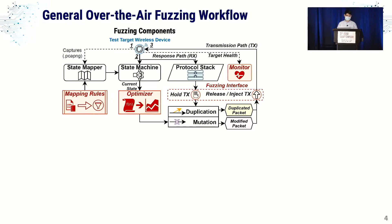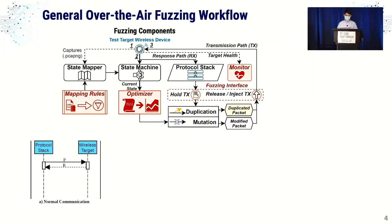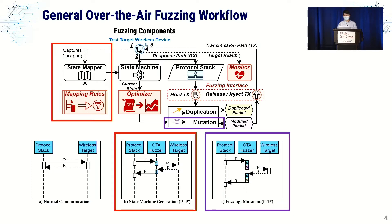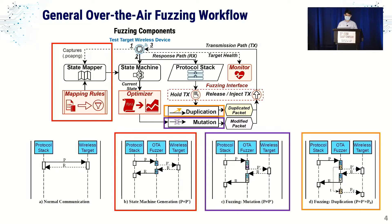Looking at the overall architecture of the framework, we introduce three steps to fuzz a Bluetooth Classic device. First, we have normal communication between the protocol stack and the target device. The first stage initiates the state mapper, where we introduce the framework between the protocol stack and the target device to reconstruct the state machine. This feeds the mutation block, which directs the device toward situations that can cause crashes by mutating valid packets. The last component is the duplication component, which sends packets out of order to cause different device behavior. The monitor component gets feedback by hooking connections between the fuzzer and the external device.